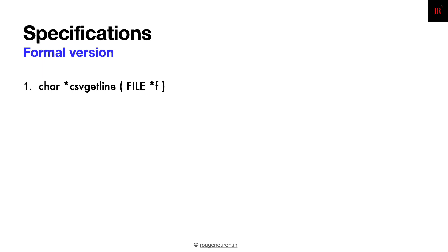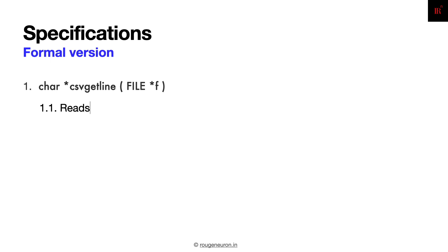Let's walk over the formal specifications for the interface defined earlier, function by function. The function csv_get_line, as its name suggests, reads only one line from the input file descriptor being provided to it.